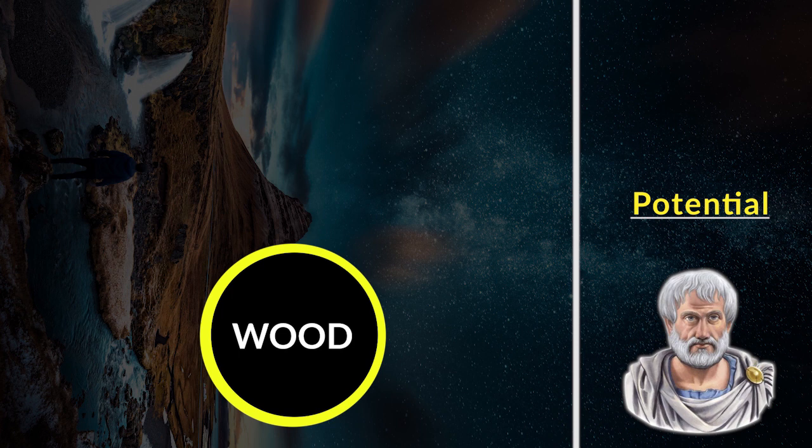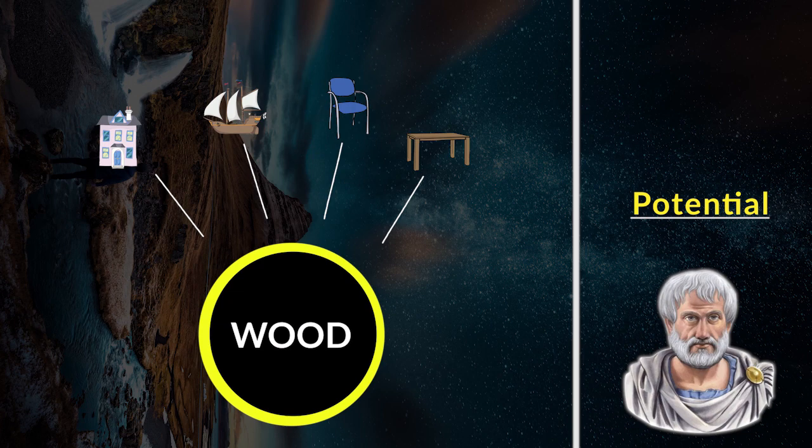It is this fitting together that leads to Aristotle's idea of potential. Let's say we take a raw material, like wood. Wood can be made into a house, a chair, a ship, or a table. The wood is potentially all those things.